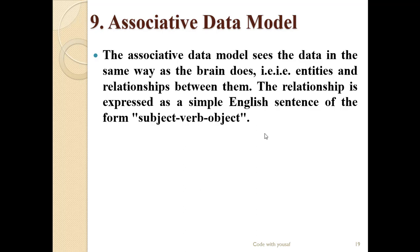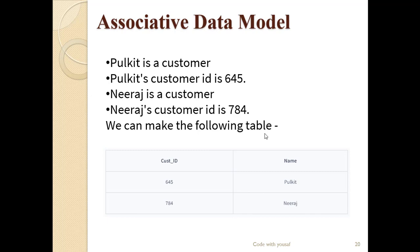The ninth one is the associative data model. The associative data model sees the data in the same way as the brain does — entities and relationships between them. The relationship is expressed as a simple English sentence of the form subject-verb-object. For example, 'Farooq is a customer' and 'Neeraj is a customer'. From these sentences we can create a table with customer ID and name as columns.